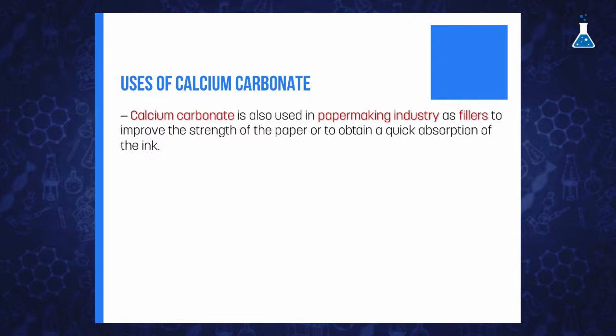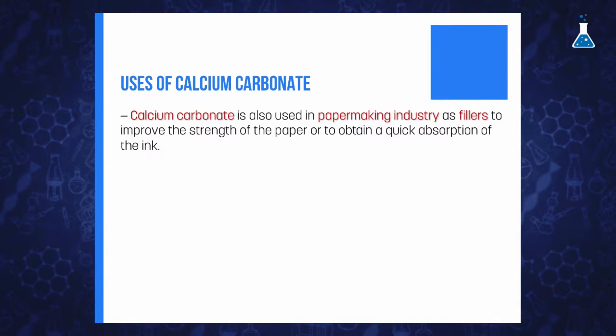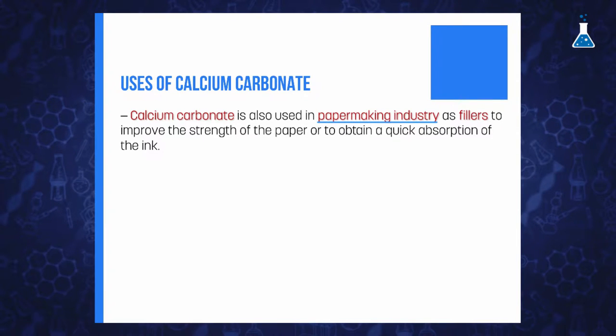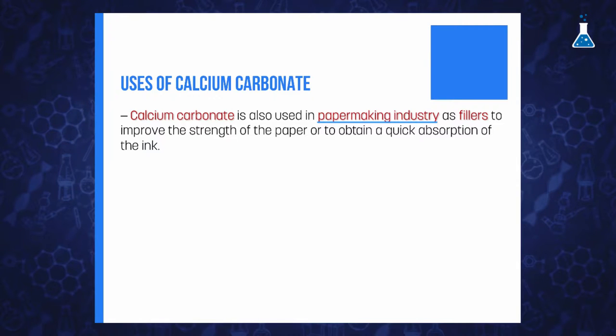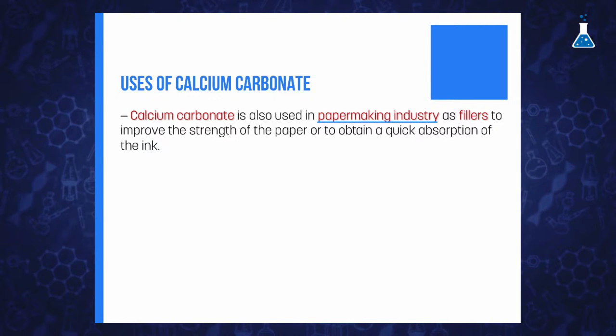Although the rate of dissolution of limestone is slow, it occurs more rapidly in warm climates at tropical latitudes. Calcium carbonate is also widely used in the paper-making industry as a filler to improve the strength of the paper or to attain quick absorption of ink, which prevents smudges. It is also useful as a pigment to whiten paper.